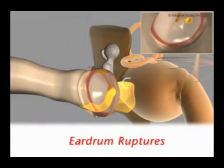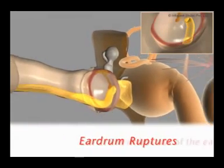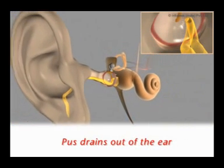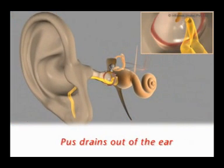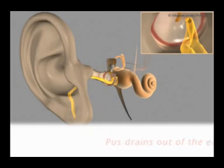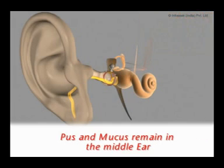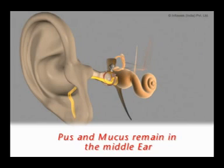Sometimes the eardrum ruptures and pus drains out of the ear. But more commonly, the pus and mucus remain in the middle ear due to the swollen and inflamed eustachian tube.